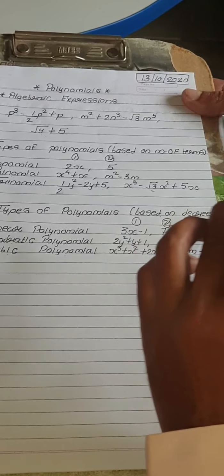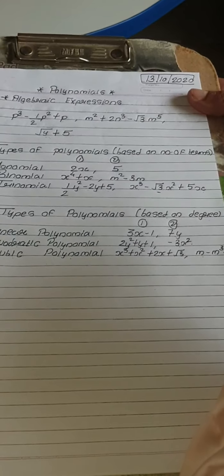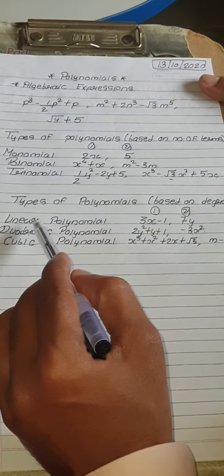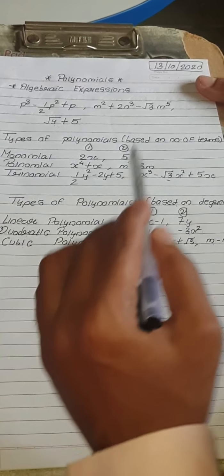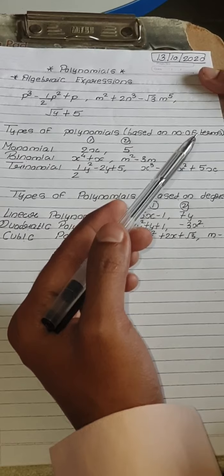In total we have seen six types of polynomials. The first three are based on number of terms: a single term is a monomial, two terms is a binomial, and three terms is a trinomial. The last three are based on degree: if the degree is 1 it is a linear polynomial, if the degree is 2 it is a quadratic polynomial, and if the degree is 3 it is a cubic polynomial.